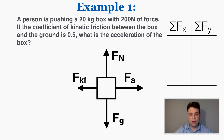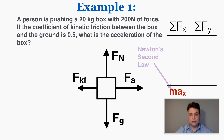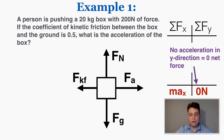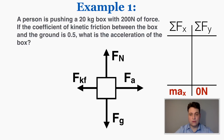According to Newton's second law, if this object is accelerating in the x direction then the sum of all the forces in the x direction must equal the object's mass times its acceleration. There's no acceleration in the y direction — it's not moving up or down at all — so on the y part of the force table I would fill out zero Newtons.